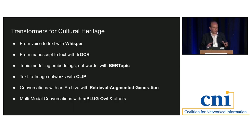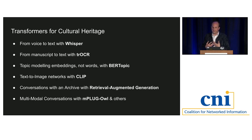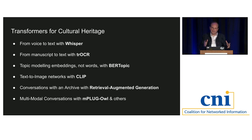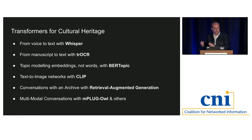In this talk we've explored many ways transformers can be useful for cultural heritage work: taking voice into Unicode text, taking manuscripts into Unicode text, doing topic modeling on embeddings rather than words with GPU acceleration via BERTopic, text-to-image networks creating dual spaces of linguistic tokens and pixel distributions, conversing with an archive using LLM layers for conversational power while drawing facts from a curated archive, and finally this current state-of-the-art in multimodal conversations.